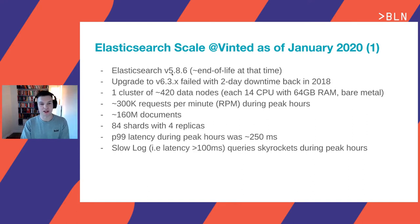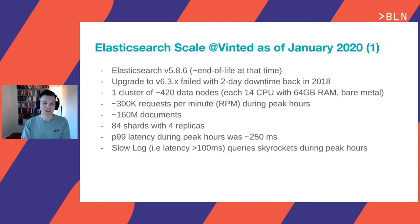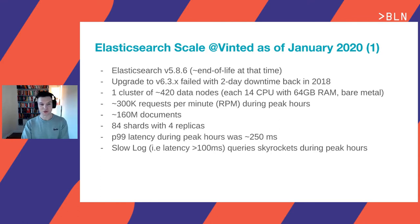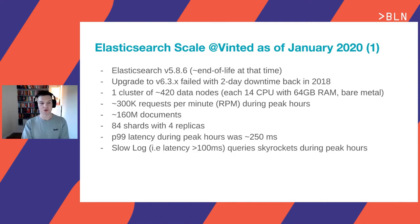As of January 2020, Elasticsearch was at version 5.8.6, which was more or less at end of life. This version was a little old because an upgrade attempted some time ago to a newer Elasticsearch version failed miserably, causing some downtime, and it was a hot topic. The Elasticsearch cluster was really big — we had one main cluster with around 420 data nodes, each with 14 CPUs and 64 gigabytes of RAM, all on bare metal.